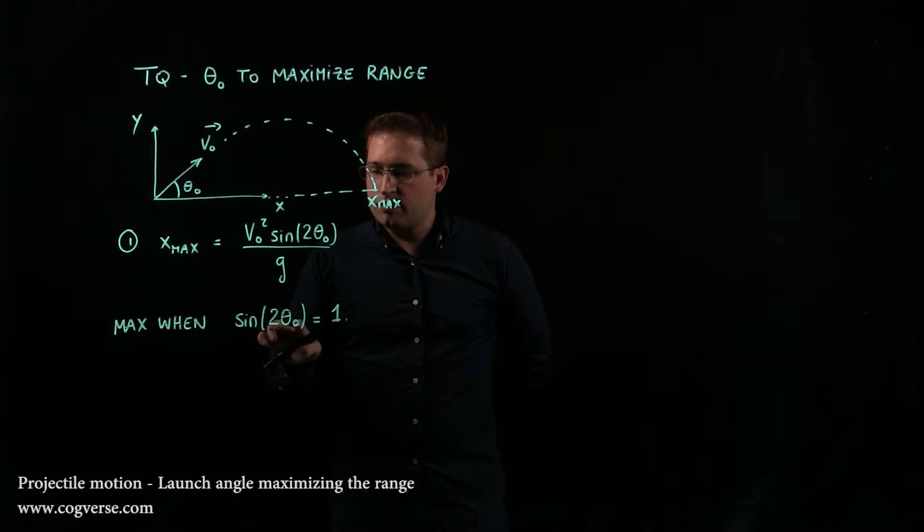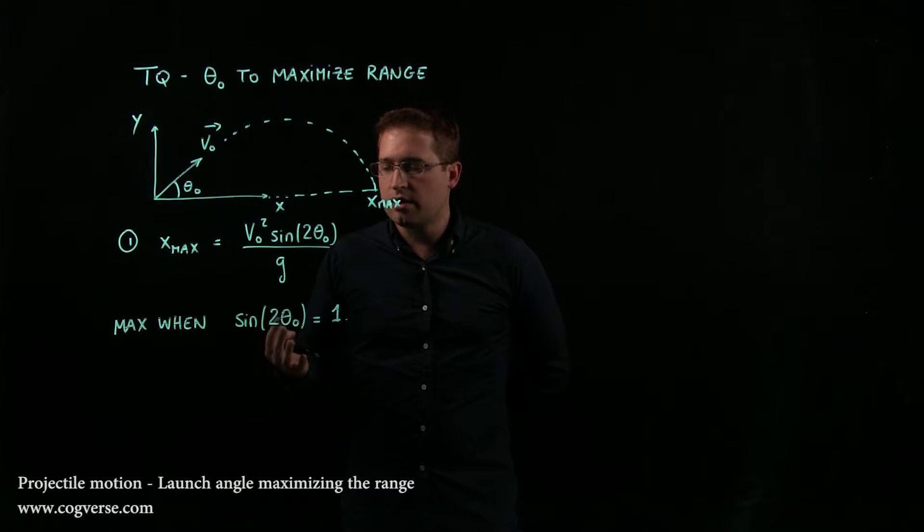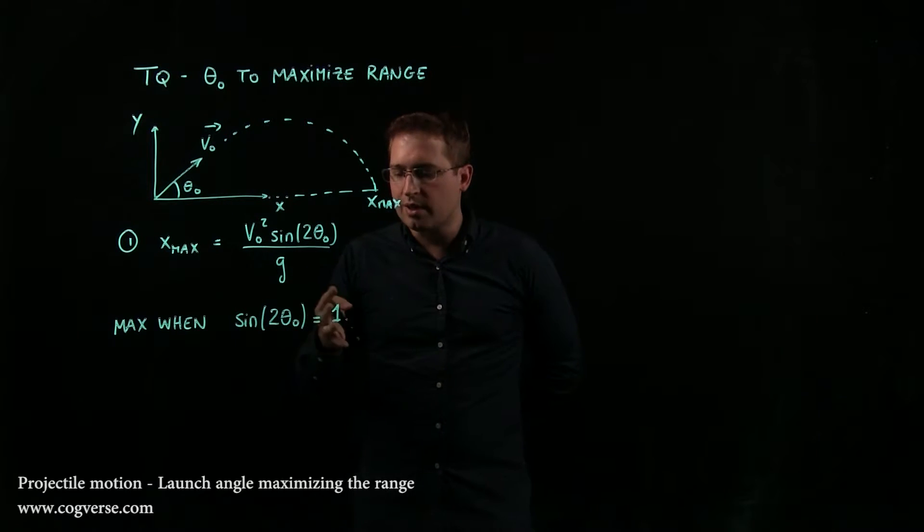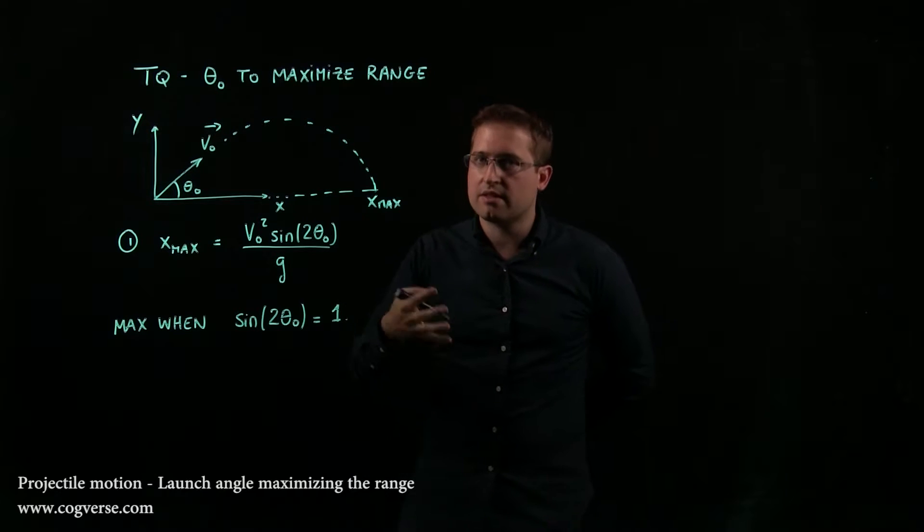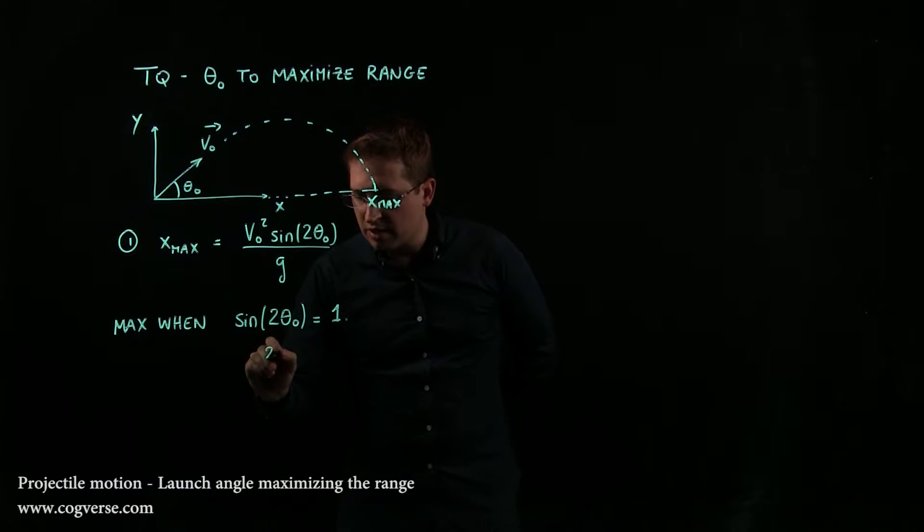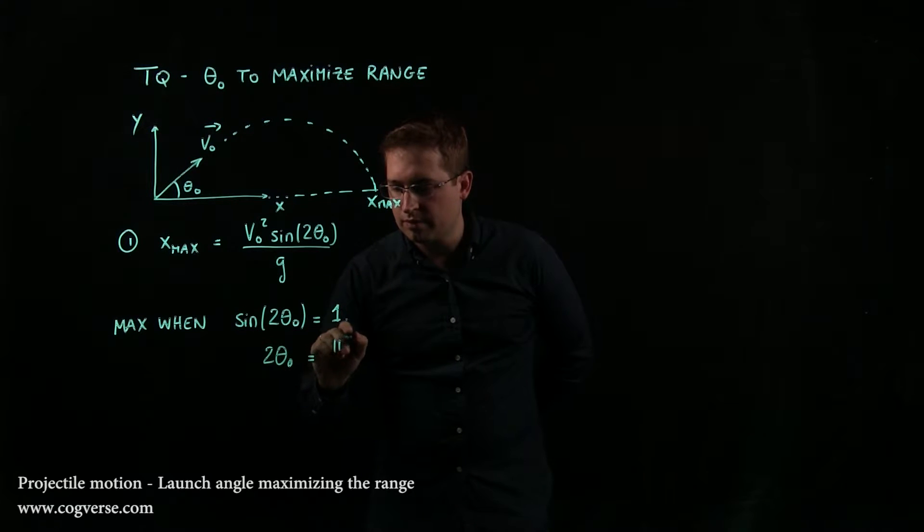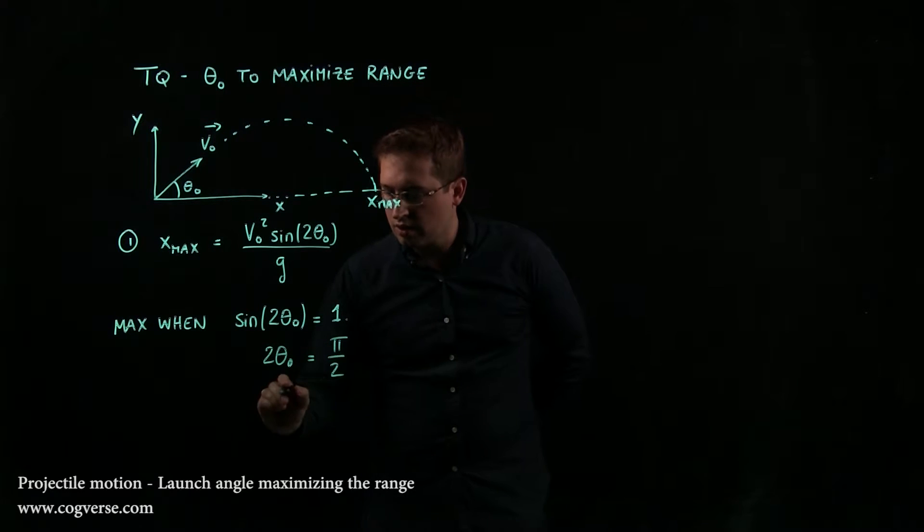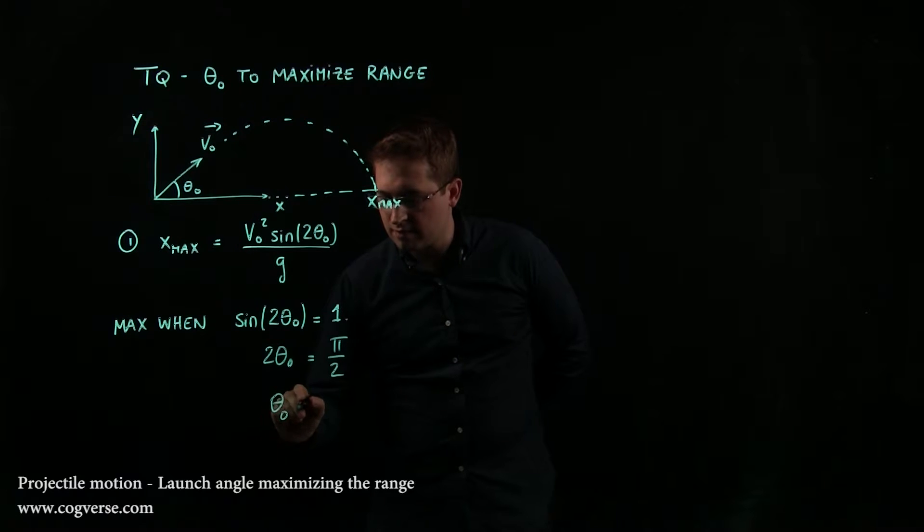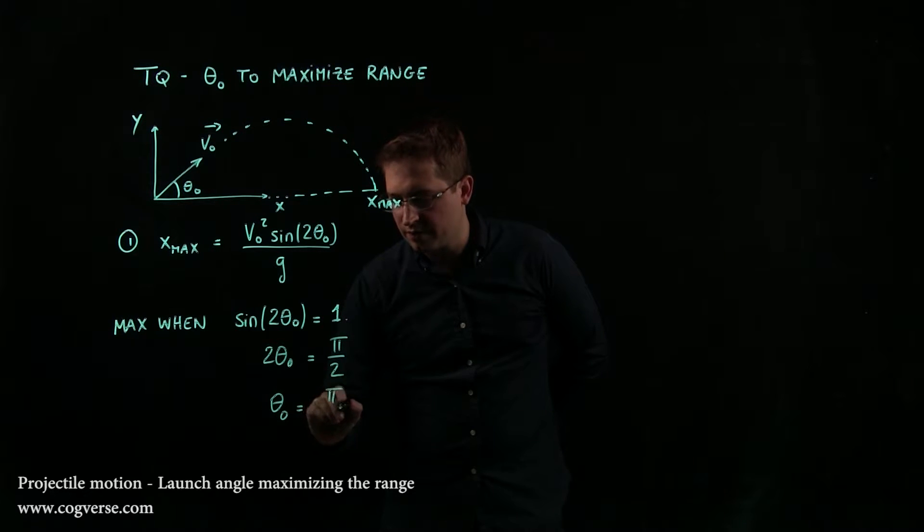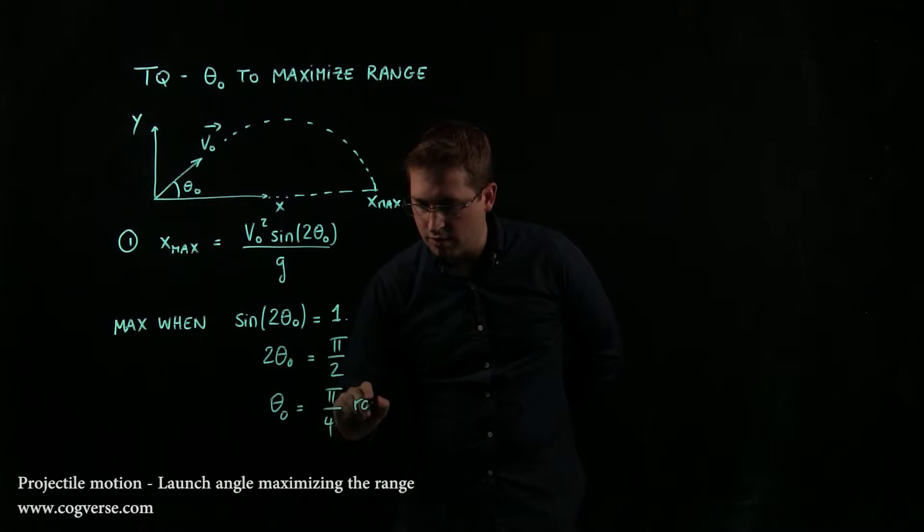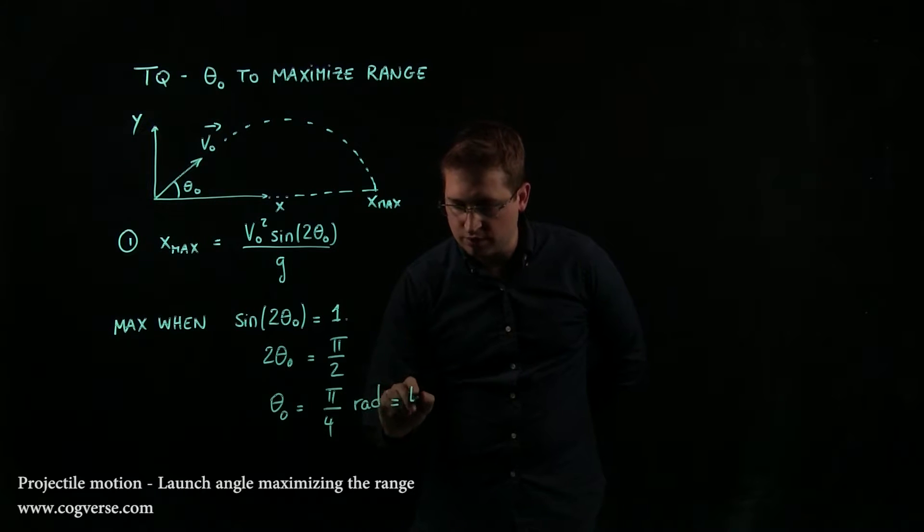So that means that 2θ₀ has to be 90 degrees. But 90 degrees—well, we prefer radians, so let's say π over 2. So this means that 2θ₀ has to be equal to π/2, which means that θ₀ has to be equal to π/4 radians, which is 45 degrees.